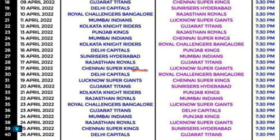April 20th: Gujarat Titans vs Sunrisers Hyderabad. April 21st: Kolkata Knight Riders vs Punjab Kings. April 22nd: Rajasthan Royals vs Mumbai Indians.